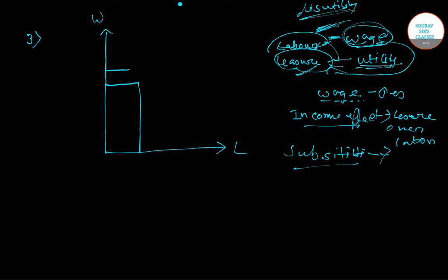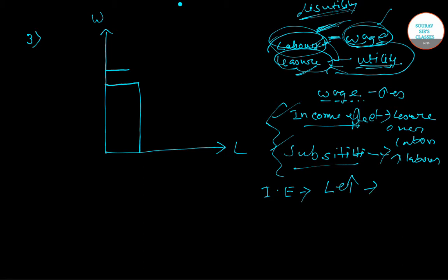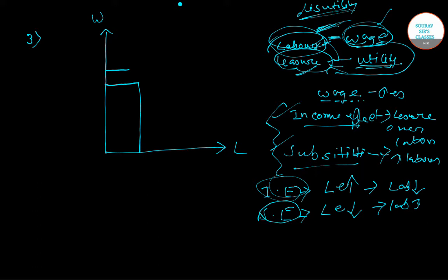To summarize: due to the income effect, leisure increases and labor falls. Due to the substitution effect, leisure falls and labor increases. In the question, it is given that the income effect becomes stronger than the substitution effect — meaning labor falls overall. The right answer is option C: the labor supply curve will be backward bending.